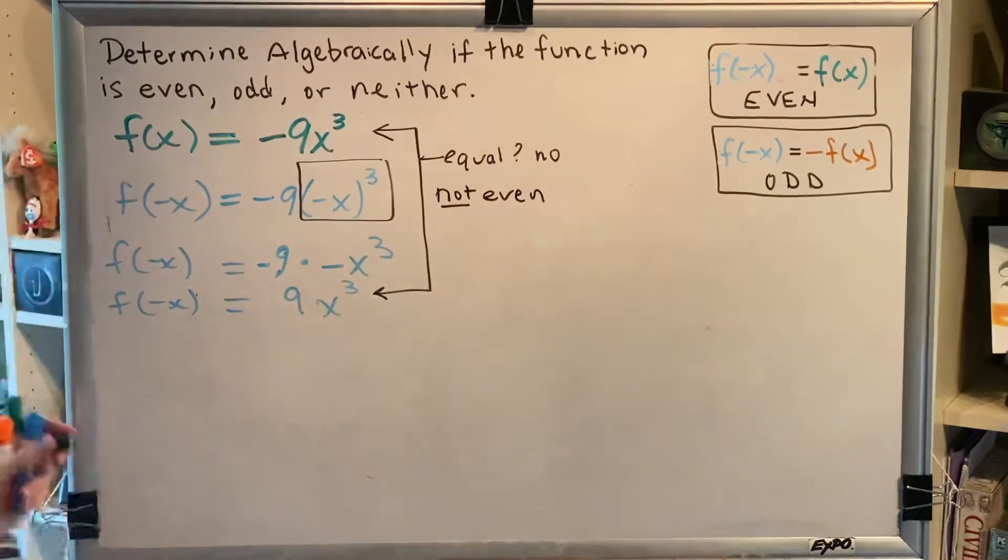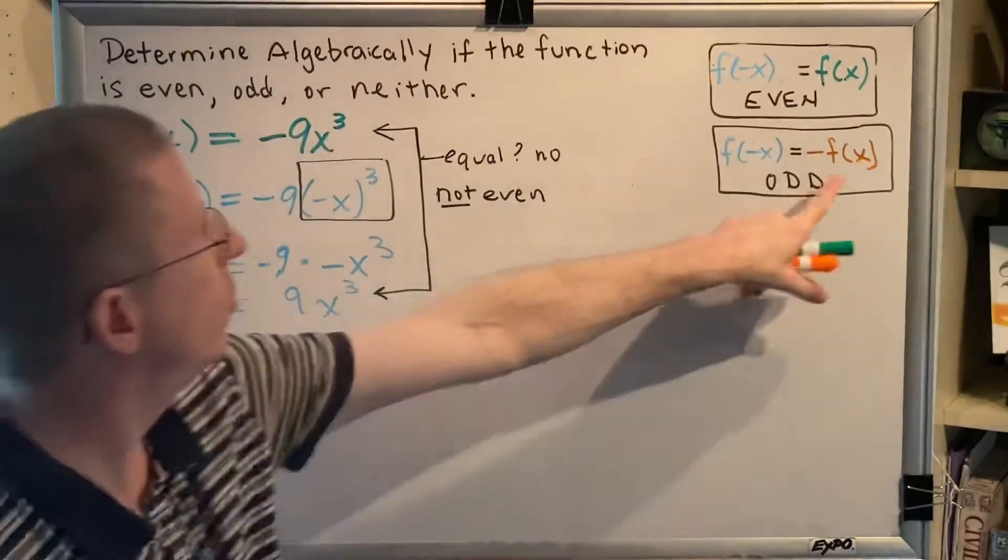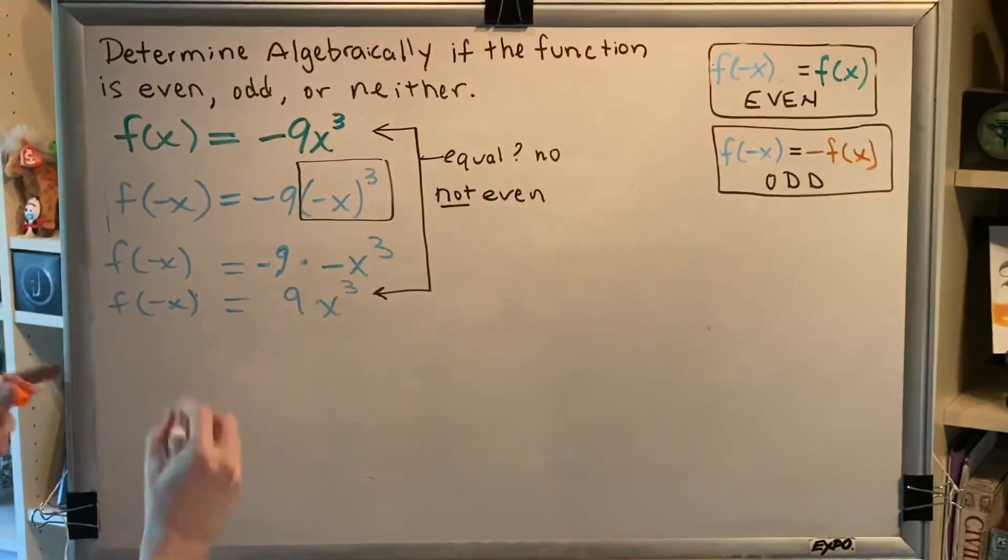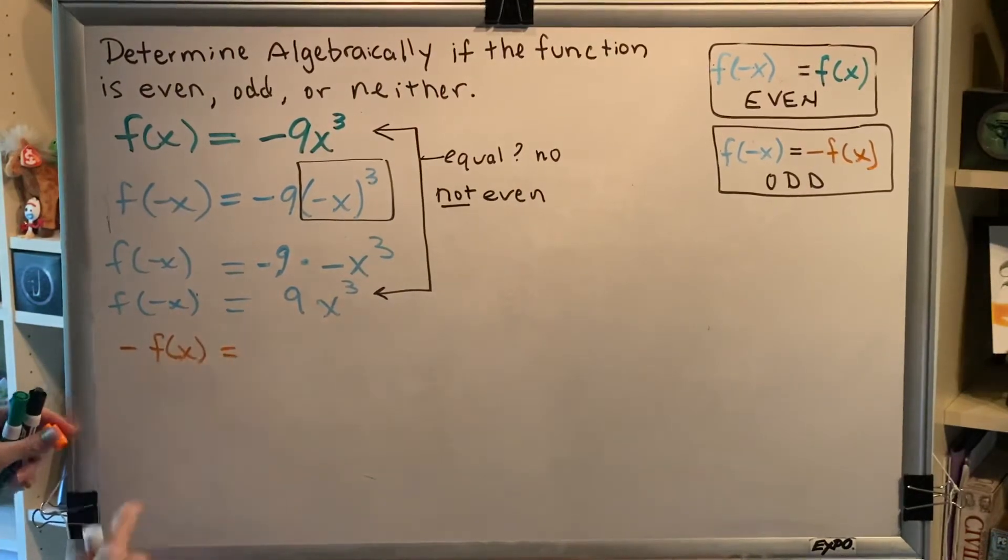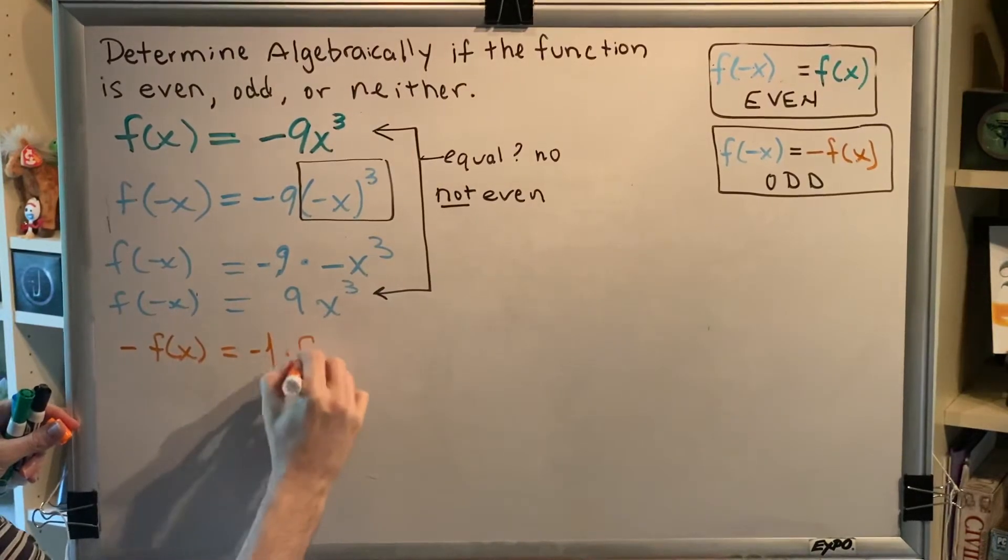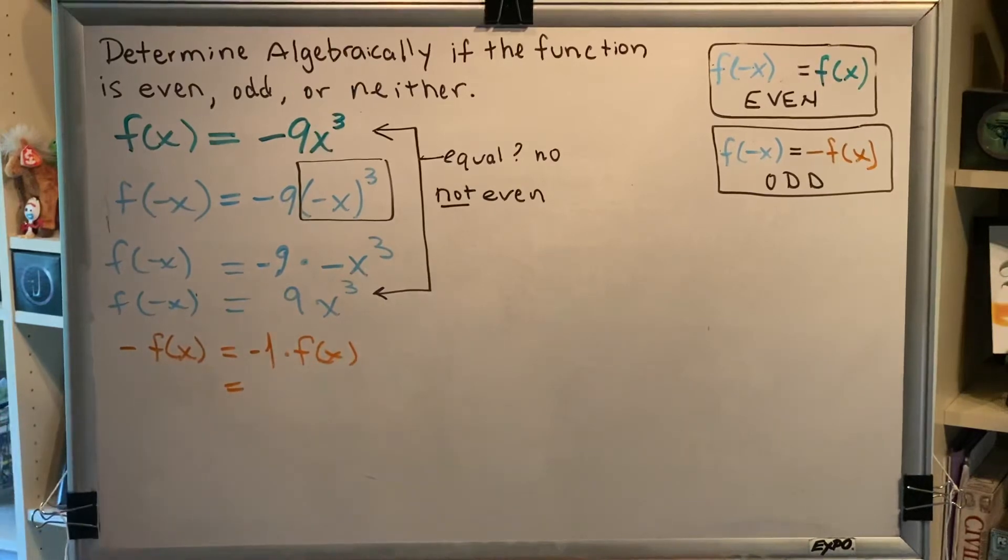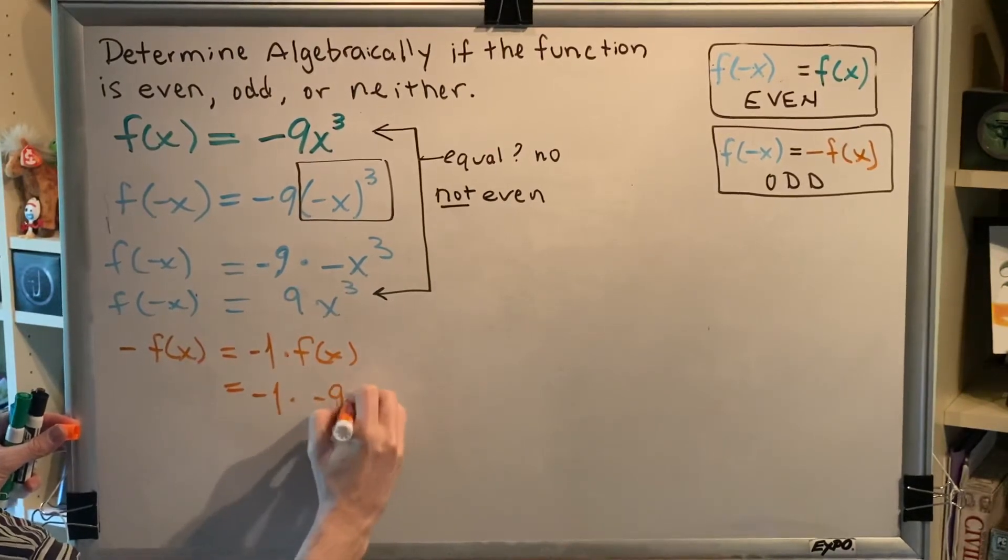Which means we must continue our algebra. And so now we're going to turn our attention to the orange. Negative f of x. Negative f of x is the same thing as negative 1 times f of x. So, we've just got to figure out what that is equal to. So, we're going to replace f of x with what was given to us in the problem. So, we get negative 1 times negative 9x cubed.